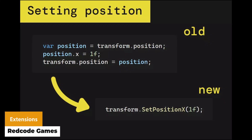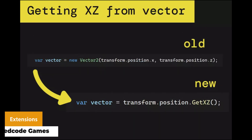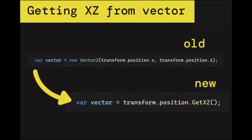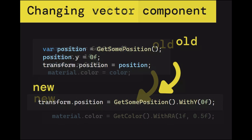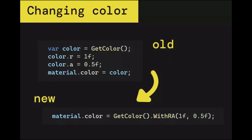We've got something called Extensions. This allows you to take what you would normally write in three lines of code and condense it down into one. You can write code faster and more efficiently. It allows structures and classes to be extended — whether that's floats, doubles, colours, vectors, quaternions, rects, objects, graphics, transforms, rect transforms, cameras — and has loads of examples like setting a transform position in one line or vectors in one line.